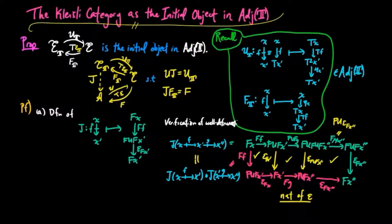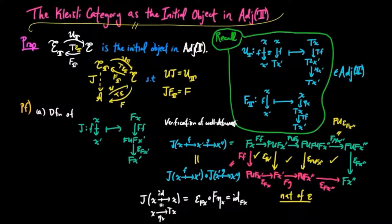For preservation of identities, J applied to the identity on X, which is equal to the unit of the monad η_X, equals ε FX' followed by F η_X. But this is nothing but the identity on FX by the triangle identity of the adjoint situation.